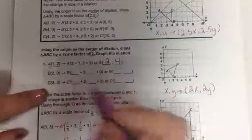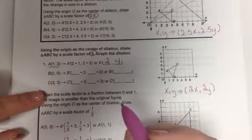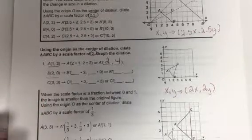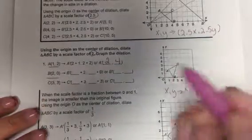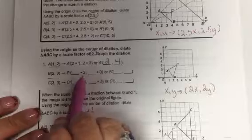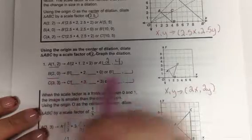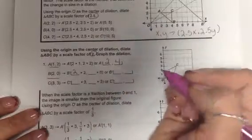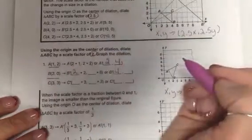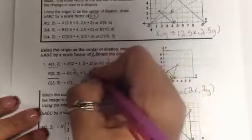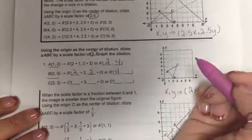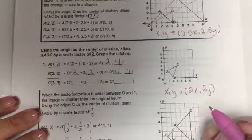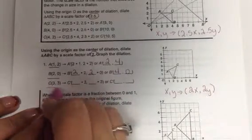Now we're going to look at B. B is (2, 0). And if we look here, it gives us our 2, which is our x. And we have to multiply that times our scale factor, which is 2. 2 times 2 is 4. Then we're going to take the 0, and we're going to multiply it times our scale factor. 2 times 0 is 0.